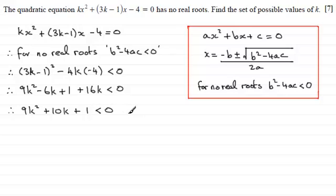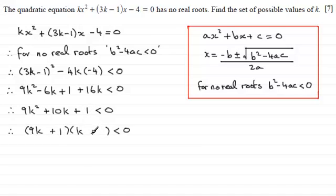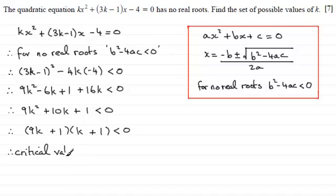So we've got a quadratic inequality to solve. We then go on to factorise this, and it factorises very nicely: 9k plus 1 times k plus 1. That gives 9k squared, the 1 times 1 on the end, and 9k plus 1k which is 10k. Now we find the critical values — where the expression equals 0. If 9k plus 1 equals 0, then k equals minus 1 ninth; and if k plus 1 equals 0, then k equals minus 1.